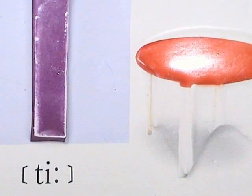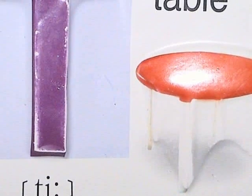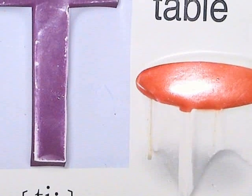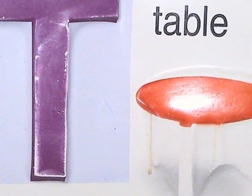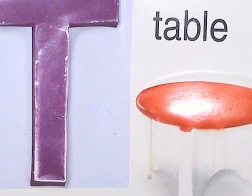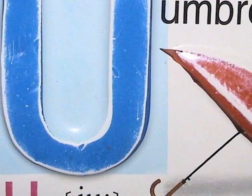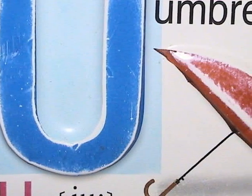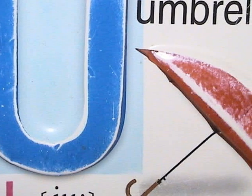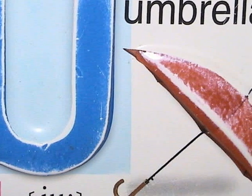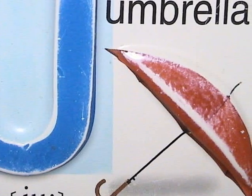The letter T. T. Table. Top. Tomorrow. Lots of words with T. The letter U. A sound. Like an umbrella. Or up. Or under. A sound.